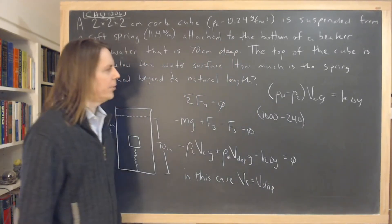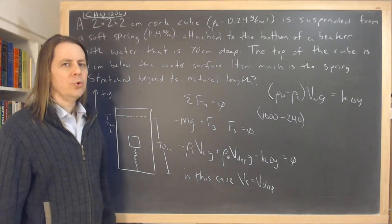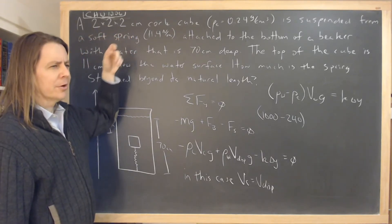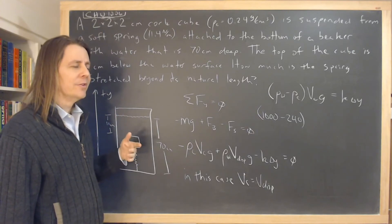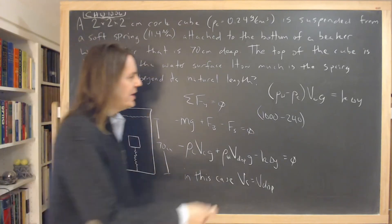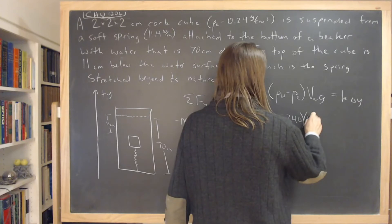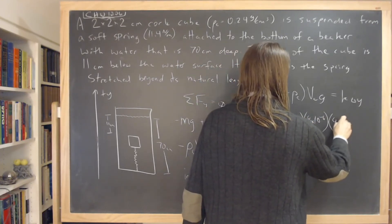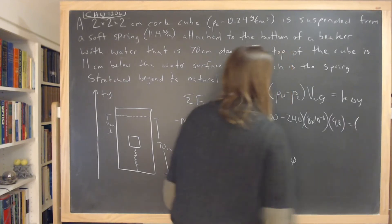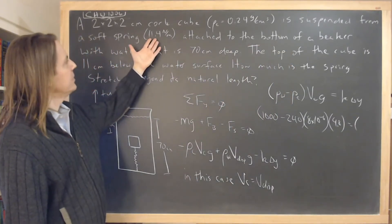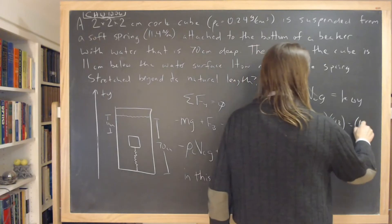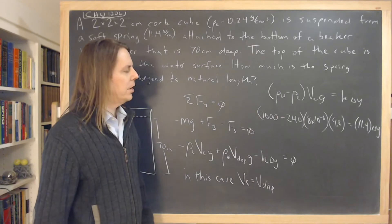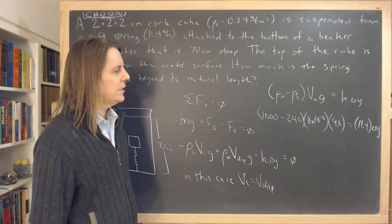So you can see the cork is less dense than the water. The volume of the cube is 2 times 2 times 2. We've got to convert centimeters cubed to meters cubed. So that's 10 to the minus 6. So it's 8 times 10 to the minus 6. And then 9.8. And then the spring constant we're just given in mks units, 11.4.